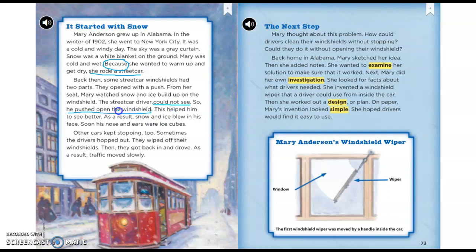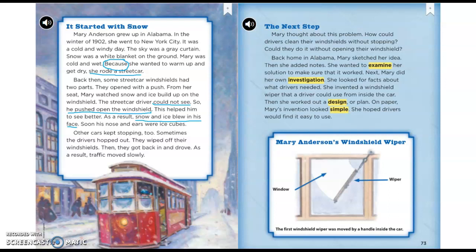He pushed open the windshield, and because he did that, snow and ice blew in his face. Soon his nose and ears were like ice cubes. If you're trying to picture that in your head, it's difficult if you've never seen a streetcar, so it's important that we look at the picture. We can see him right here with the window open, having to hang out the window to see because of all the snow and ice on the windows.